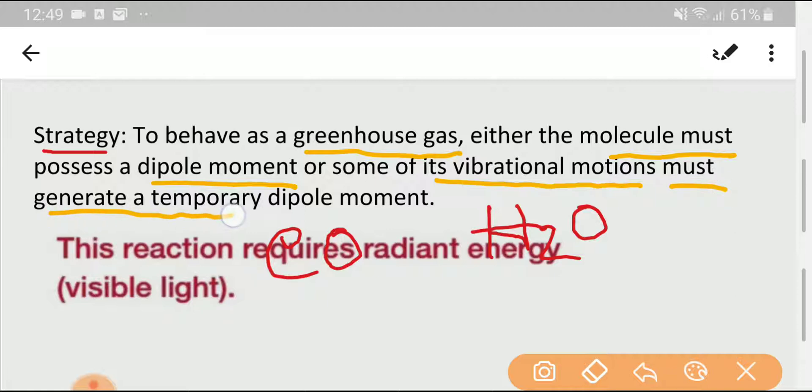That is, a molecule may have a permanent dipole moment, especially for a polar molecule, or a temporary dipole moment due to its vibrational motion.